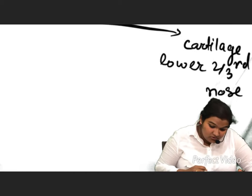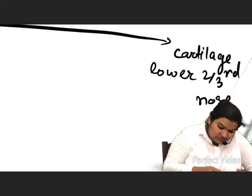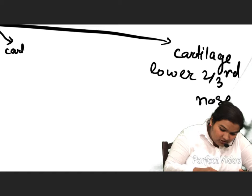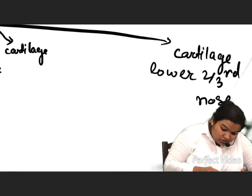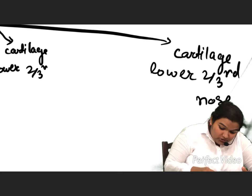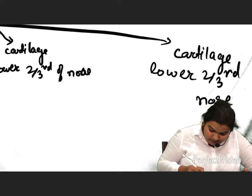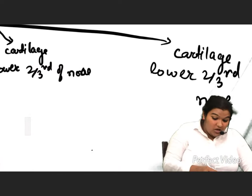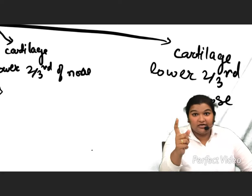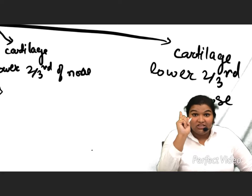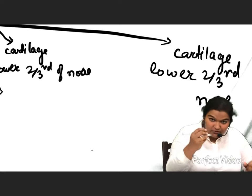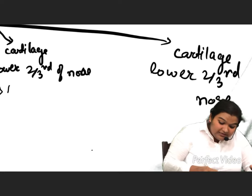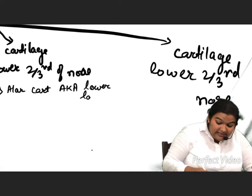Moving towards the cartilaginous part, which forms the lower two-thirds of the nose. The first cartilage is a U-shaped cartilage, the alar cartilage, also known as the lower lateral cartilage. You will come to know why it is U-shaped and where it is situated. If we see the nose from below, this part is formed by the lower lateral cartilage.